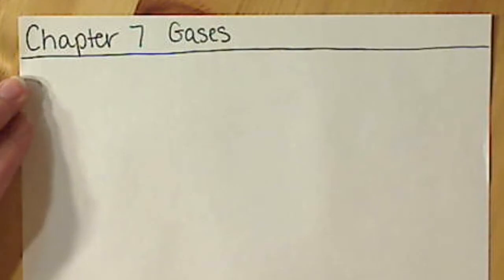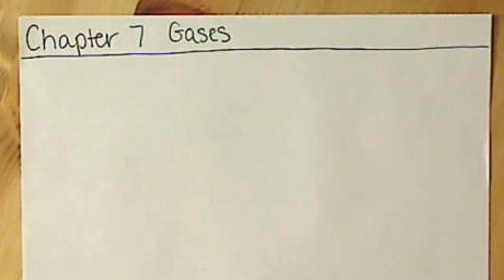There's a lot of this chapter that's going to be skipped. The first two sections, 7.1 and 7.2, covering the properties of gases and pressure, is an online lecture, so make sure that you review that before coming here.